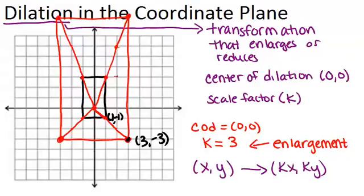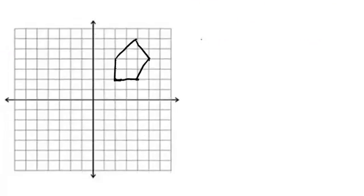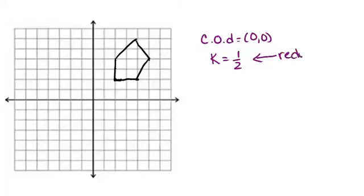And let's look at one more example. In this example, we're again going to have our center of dilation be the origin. And this time, our scale factor is going to be 1 half. Now because the scale factor is less than 1, this is going to be a reduction. In other words, our shape is going to get smaller.